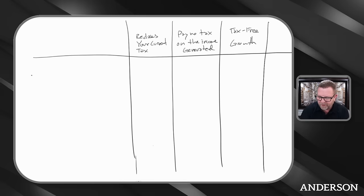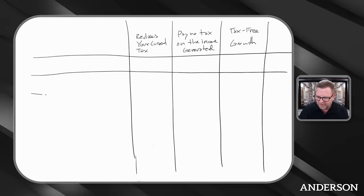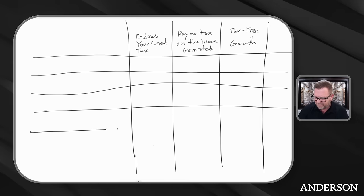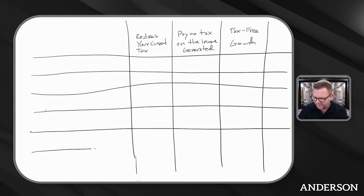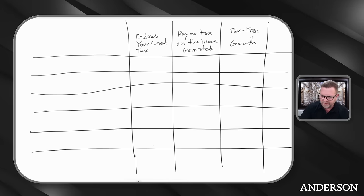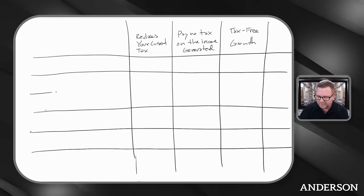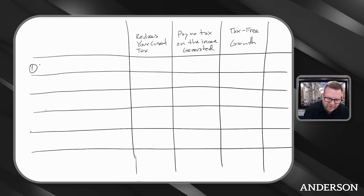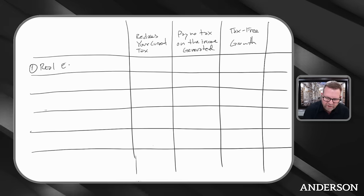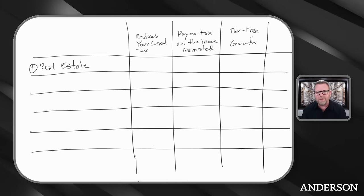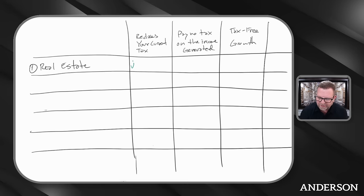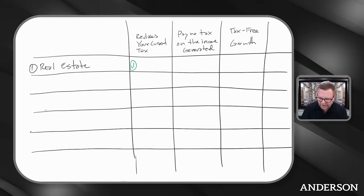Let's jump in. I'm going to go over number one, and I'm just going to make little columns here. Let's make a big old chart. My favorite is real estate. Can real estate actually reduce your taxes when you buy it? I'm just going to put a little green checkmark here because the answer is yes.